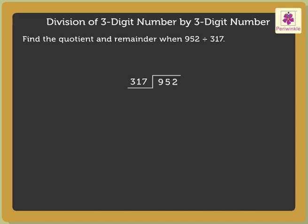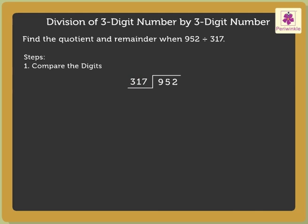To divide 952 by 317, follow these steps. Step 1 is to compare the digits. We compare the hundreds of the dividend with the divisor, as the greatest place in the divisor is hundreds. 952 is greater than 317.